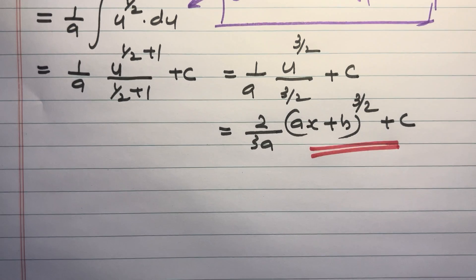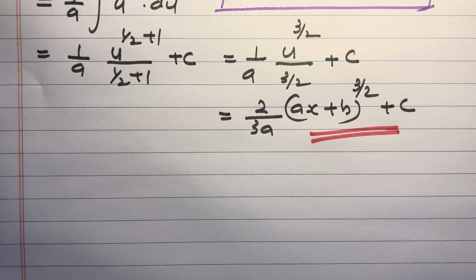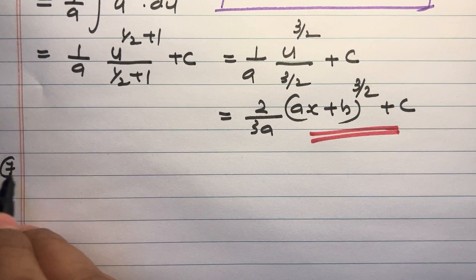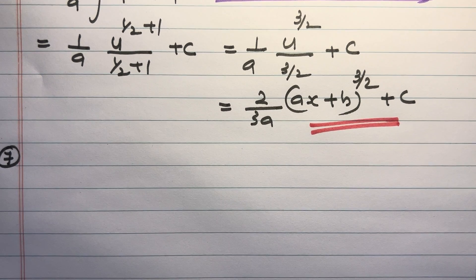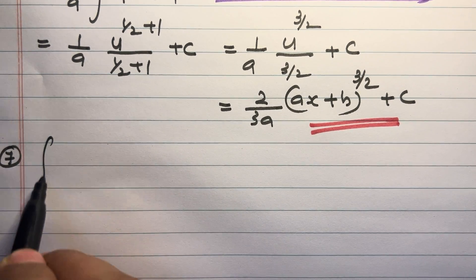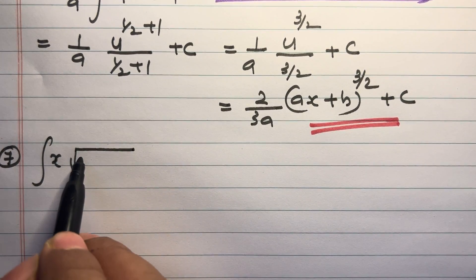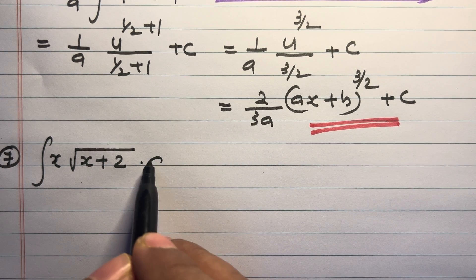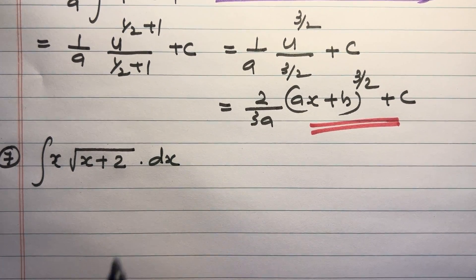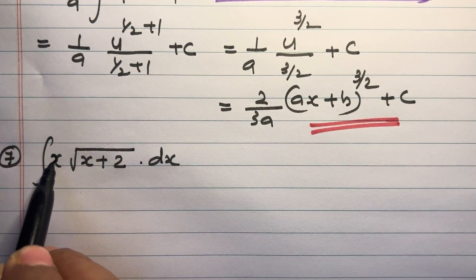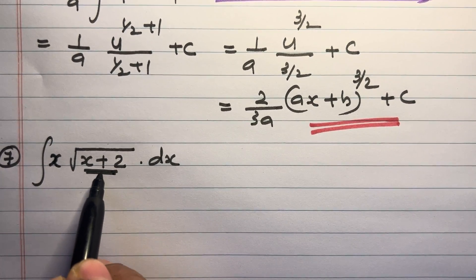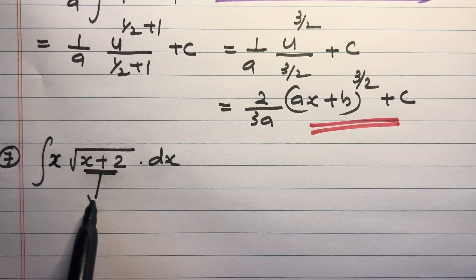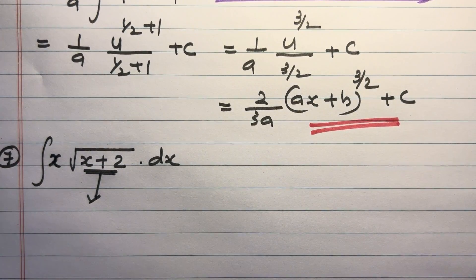Question number 7: integral of x into square root of x plus 2, dx. Using integration by substitution method, put u equal to x plus 2.